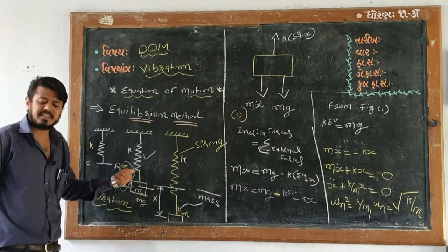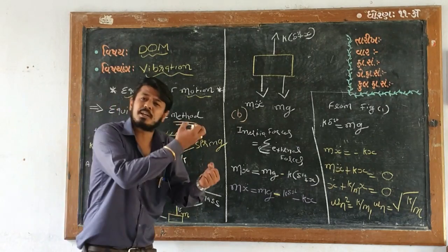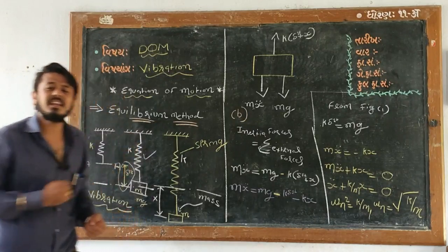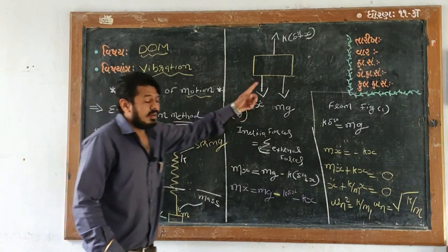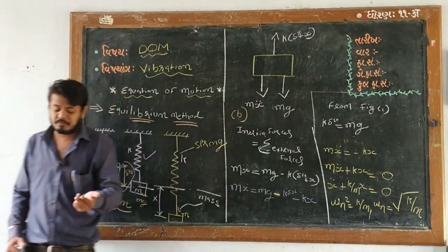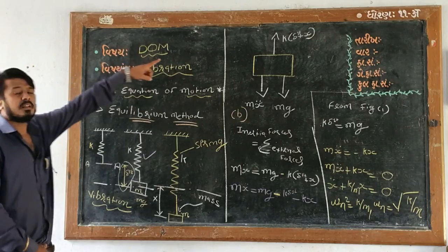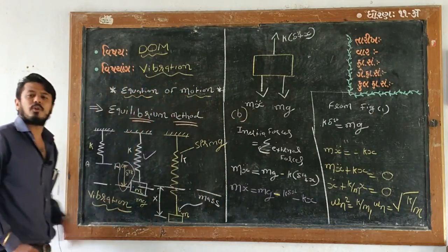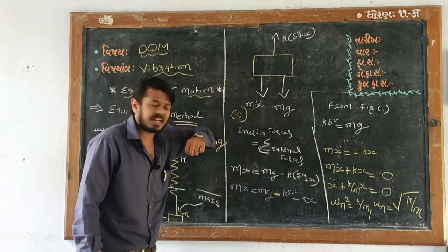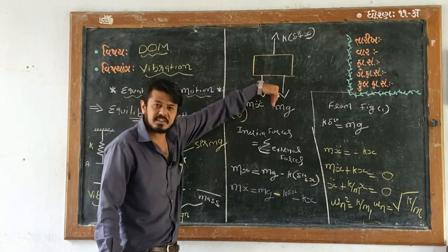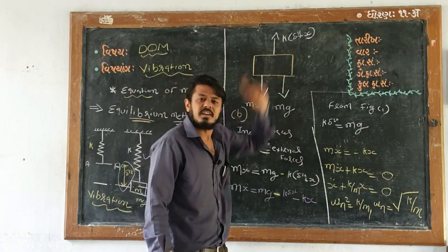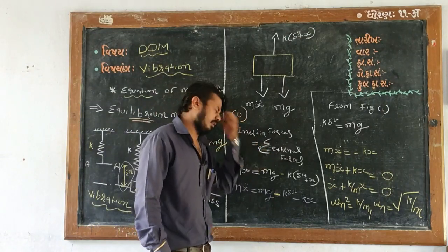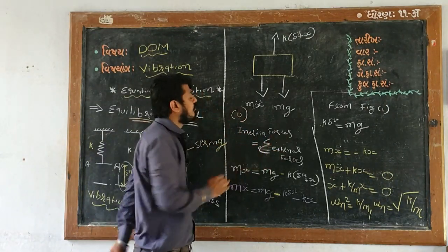The spring is an elastic body, so it produces a restoring force. This is the free body diagram with three different forces acting: the first is the inertia force, the second is the gravitational force, and the third is the spring restoring force.